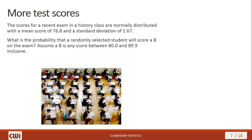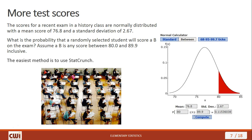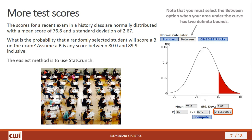Let's look at another example involving the same class — same distribution, same mean, same standard deviation. What's the probability that a randomly selected student will score a B, defined as any score between 80 and 89.9? In StatCrunch, go to the normal calculator and select the Between option so you can enter both boundary values. Set it to more than 80 but less than 89.9, hit Compute, and the answer comes out: 0.115. Note that you must select the Between option when your area under the curve has two definite boundaries.